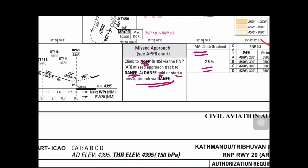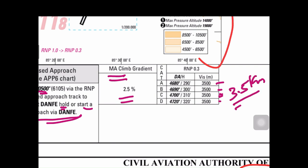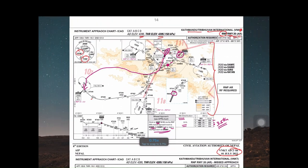The missed approach climb gradient is 2.5%. For visibility requirements on an RNP approach for landing, a decision altitude is given for each aircraft category — A, B, C, and D. At the decision altitude, you either initiate a go-around or confirm visual contact to land. The RNP visibility range required is 3.5 km. That's how you present and brief an instrument approach chart.